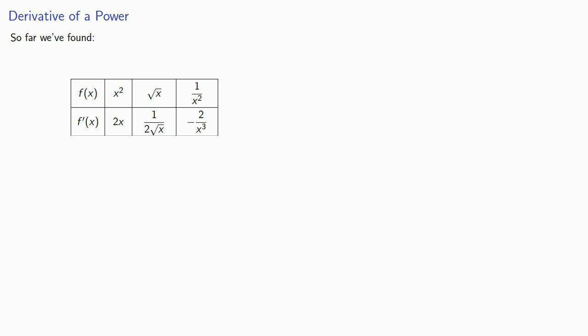Now, in order to analyze these, it's helpful if they are somewhat consistent. And so what we might start off with is writing each of these functions in exponential notation. So x to the second is x to the second. The square root of x and 1 over x squared can be rewritten in exponential form as well.